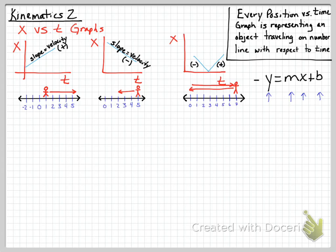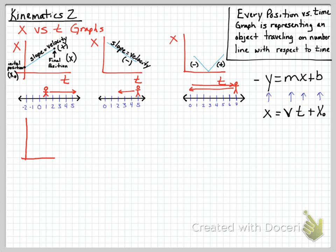On these graphs, y represents the y-axis, x represents the x-axis, m represents the slope, and b represents the y-intercept — these are things we can redefine in terms of physics. So y becomes final position, slope becomes velocity, x becomes time, and x₀ is written for the y-intercept, known as initial position. Initial position x₀ is where I started, and final position x is where I finished.